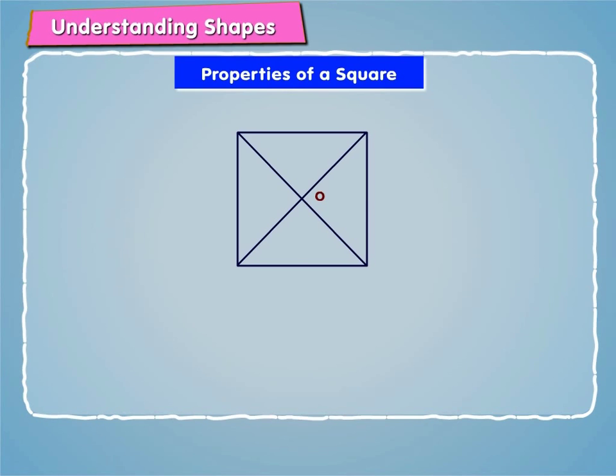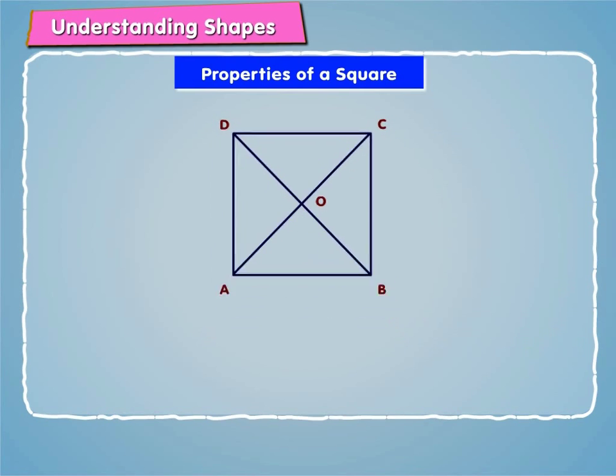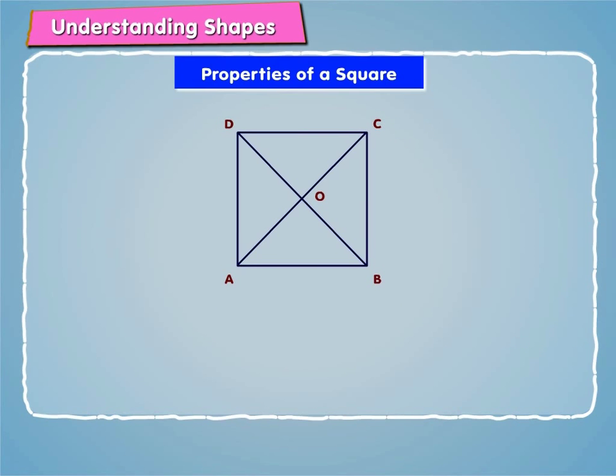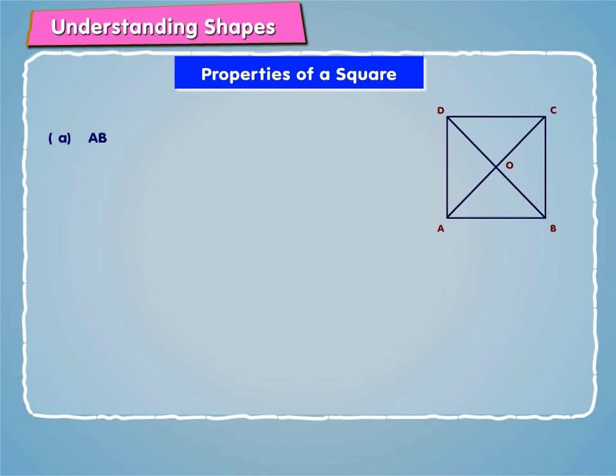In the figure given on screen, ABCD is a square, hence from the properties of a rhombus we have AB is equal to BC is equal to CD is equal to DA.